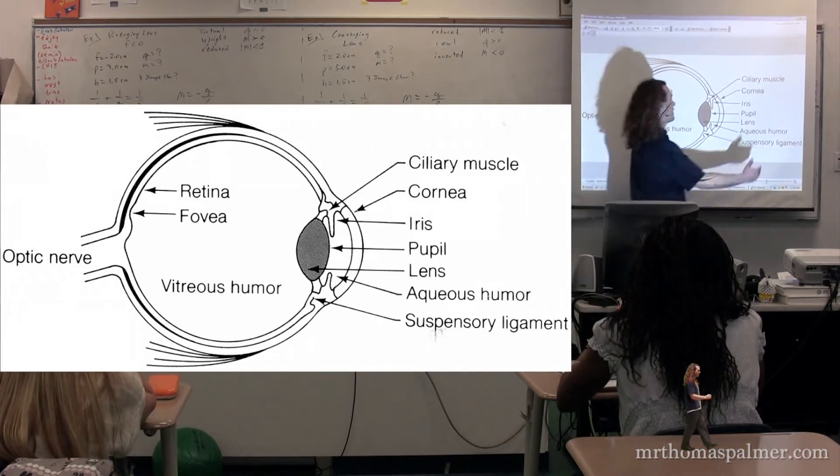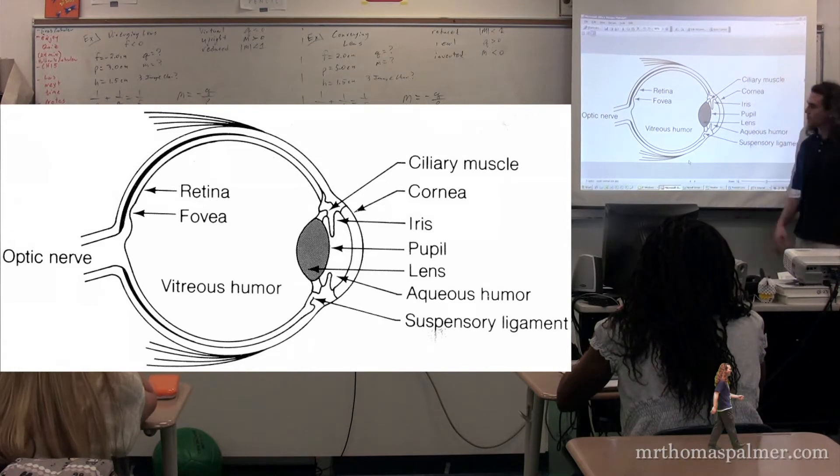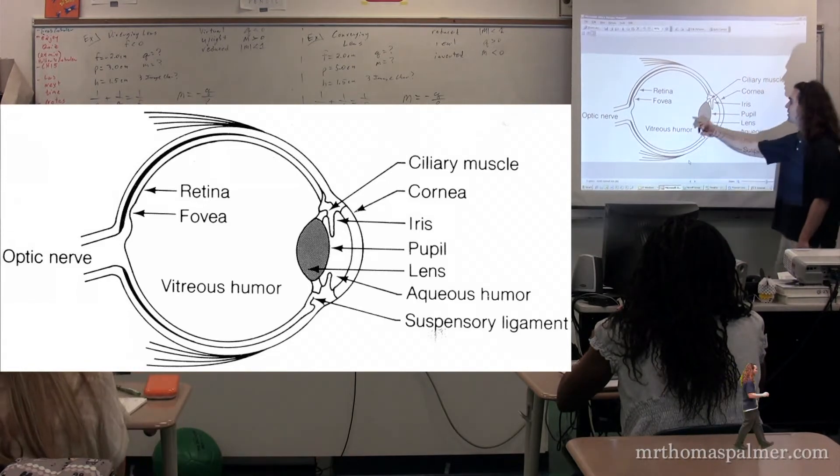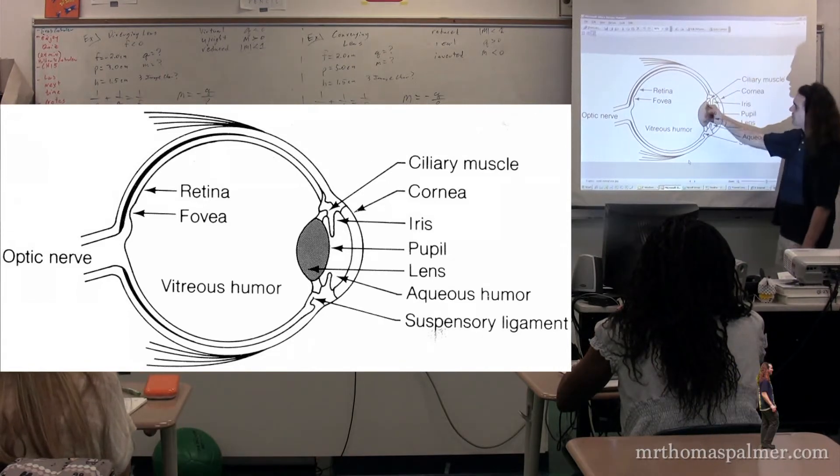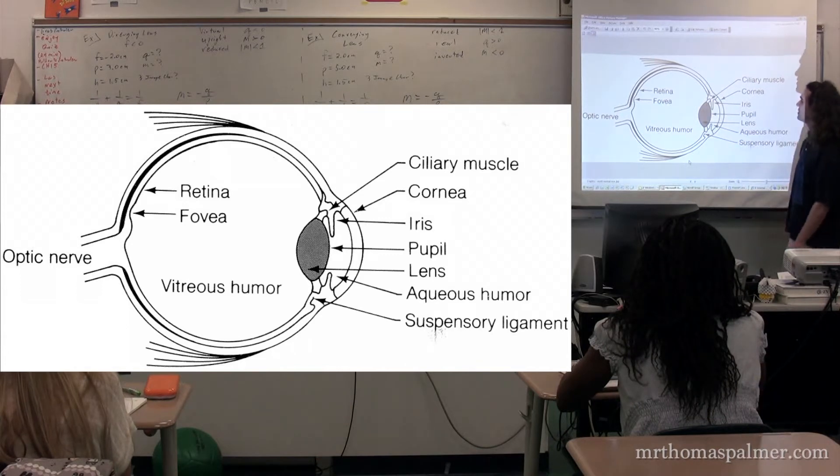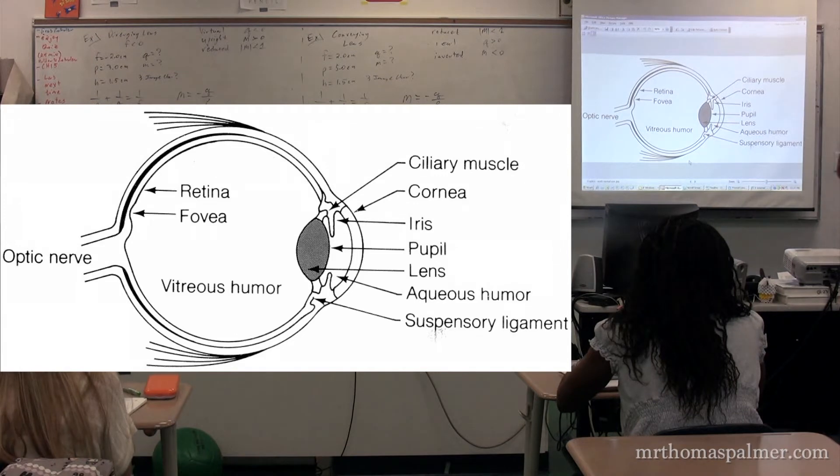You have the retina. This is where the light runs into the back side here, and your brain interprets the rods and cones, all that information. I want to specifically talk about this, the lens, and this right here, the ciliary muscle which is attached to the lens.